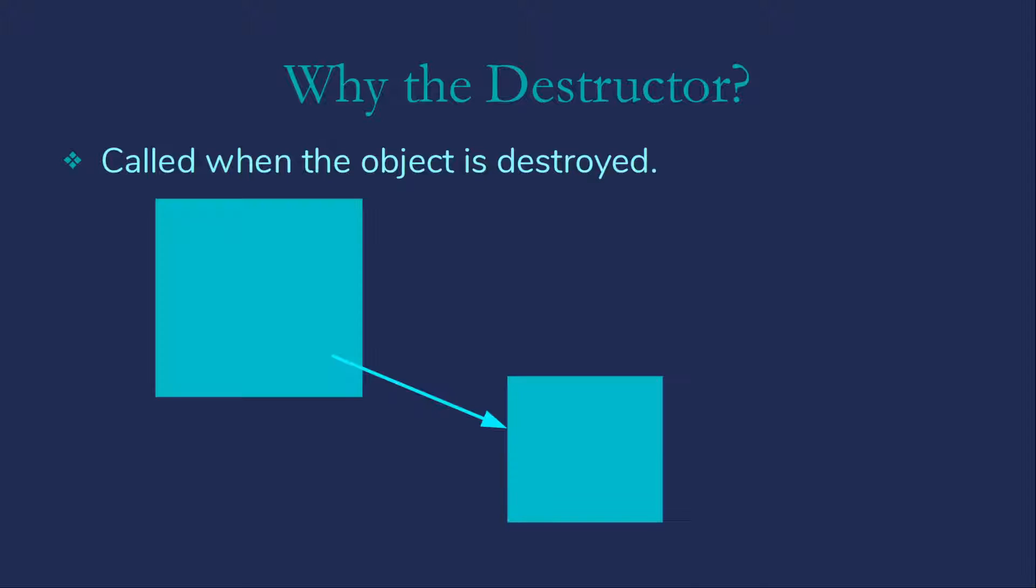Suppose that we have an object with a dynamically allocated data member. When the object is destroyed, if we're using the default destructor, nothing happens to the dynamically allocated data and we have a memory leak.